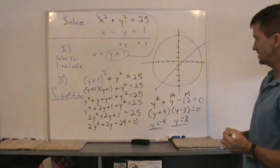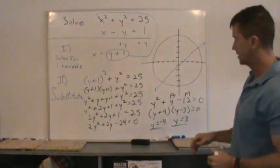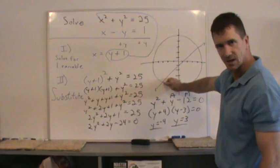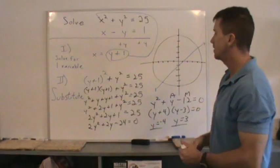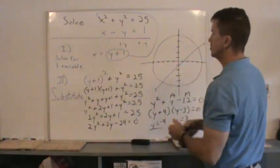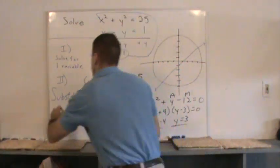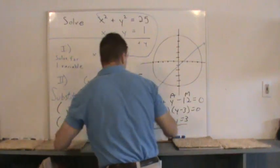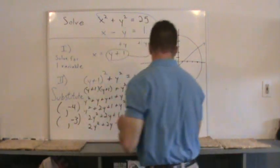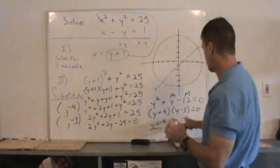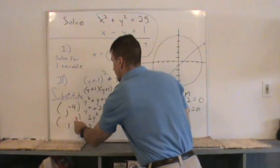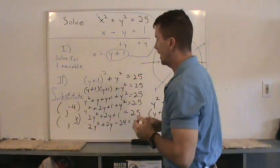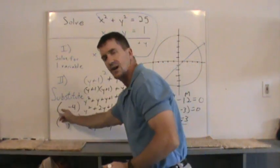Now, let's not leave our answer like this. Because solve this system, right? These are ordered pairs, x, y coordinates. So y equal to negative 4 is one of the solutions. And y equal to 3 is one of the solutions.